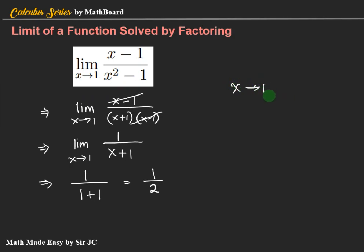Look at the value being approached by x — x approaches 1. This is a clue or hint for the factoring. We transpose this to the left, making it x minus 1. This means that one of the factors of the denominator is x minus 1, and if the numerator is also factorable, one of its factors is also x minus 1.